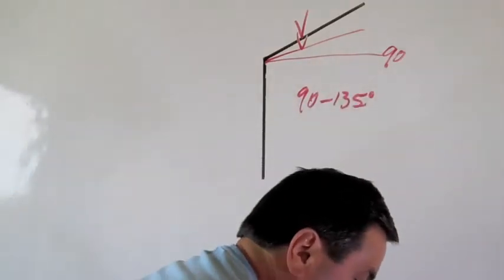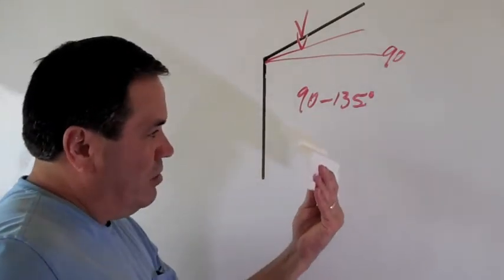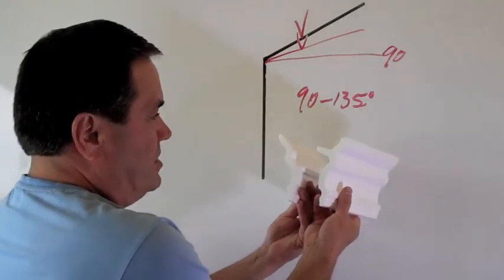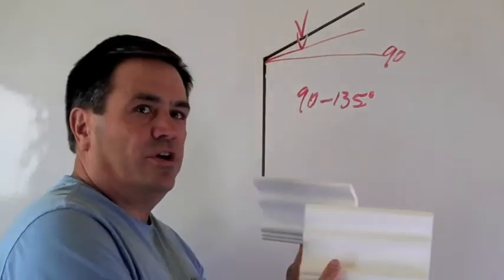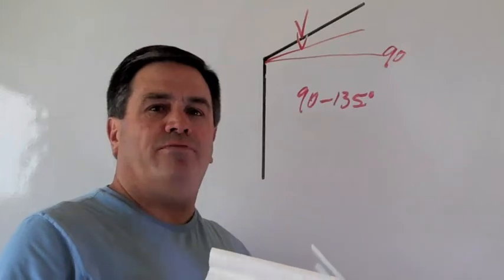We've also made our vaulted flat back foam crown moldings match our regular flat back foam crown moldings that are non-vaulted. As you can see, they'll match. So you can have both choices whether you're working on a flat wall or a vaulted wall.